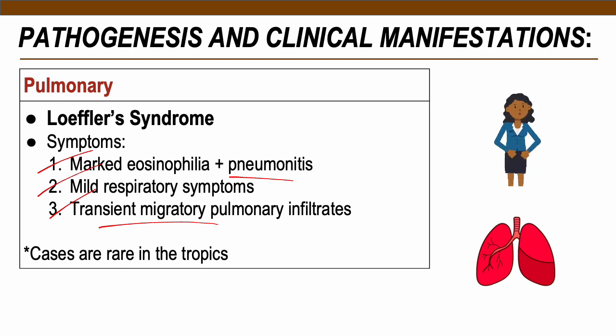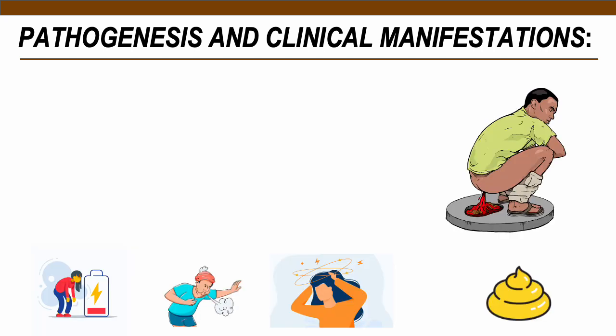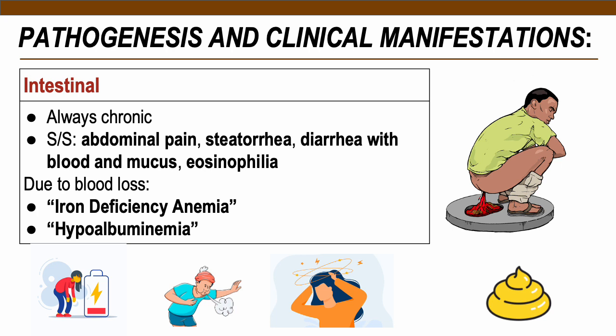Intestinal hookworm infection during worm maturation in the intestine presents with abdominal pain, steatorrhea, diarrhea with blood and mucus, and increased eosinophils. Steatorrhea and bloody diarrhea result from hookworms constantly biting and attaching to the intestinal lining, causing small lacerations that leak blood. Due to blood loss, patients at chronic stages may develop iron deficiency anemia and hypoalbuminemia — a condition of low albumin in the blood.